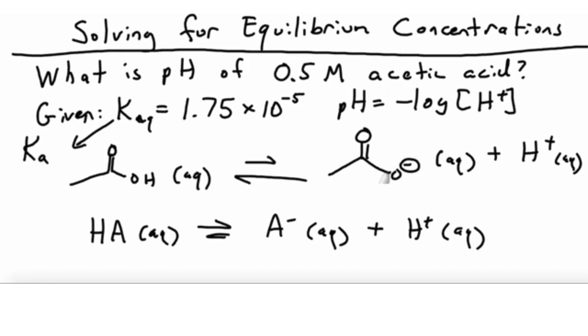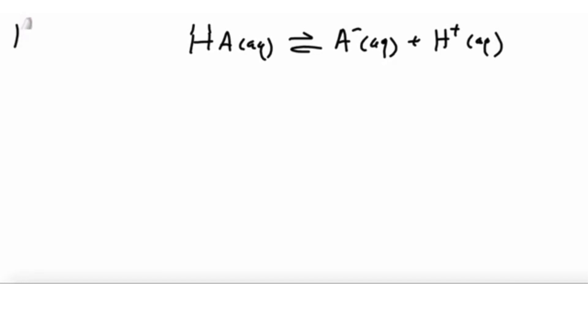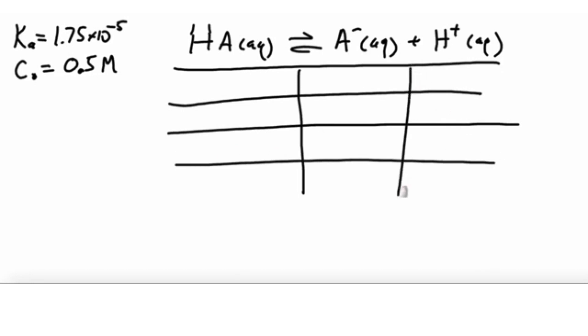Let's work the problem. We have a Ka of 1.75 times 10^-5 and a concentration of acid of 0.5 molar. We took half a mole of acetic acid and dissolved it in enough water to make one liter. We call this C naught because it's the concentration before reaction. To solve, we'll do an ICE table: initial concentration, change in concentration, equilibrium concentrations.